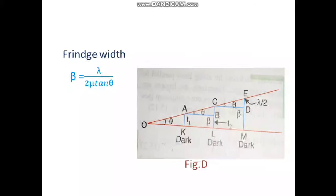We can refer the diagram or figure D by which we can say that a dark fringe occurs at A where the relation 2 mu T cos of R equal to M lambda is satisfied.